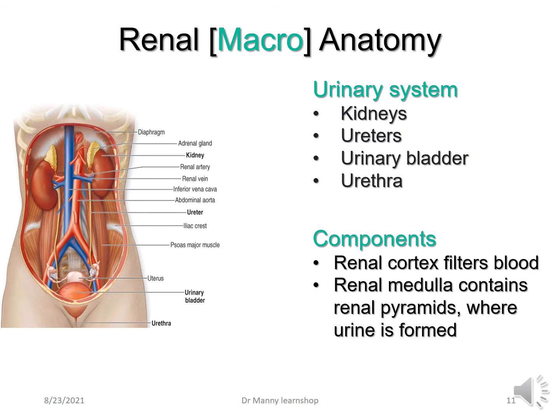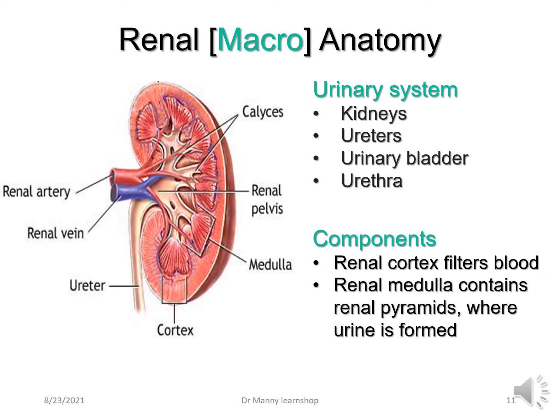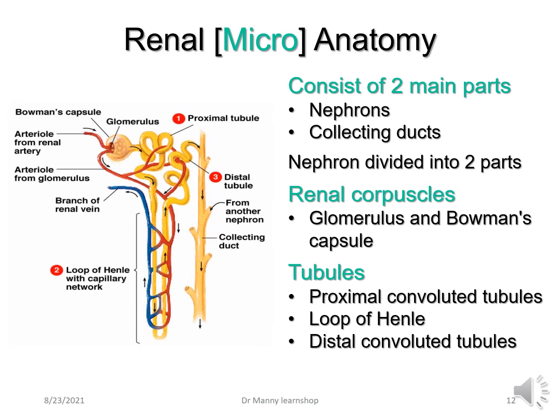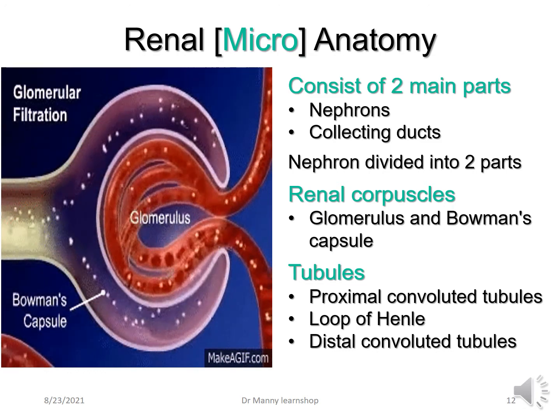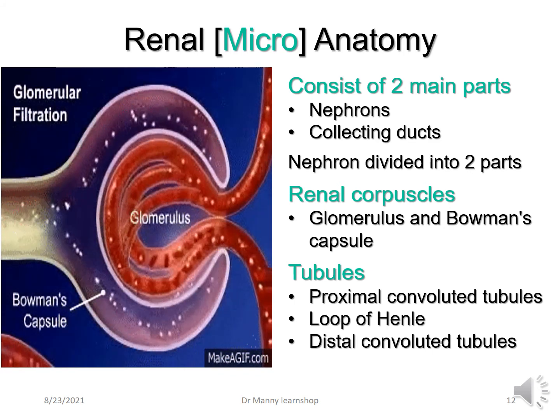Now let's review the renal anatomy. First, the macro — the big parts. The urinary system consists of the kidneys, ureters, urinary bladder, and urethra. The components are the renal cortex, which is the outer part that filters the blood, and the renal medulla, which is the inner part and contains the renal pyramids where urine is formed. In the micro anatomy, the kidney consists of two main parts: the nephrons and the collecting tubules or ducts. The nephron is divided into the renal corpuscles — comprising the glomerulus and Bowman's capsule — and the tubules, which include the proximal convoluted tubule, the loop of Henle, and the distal convoluted tubule.